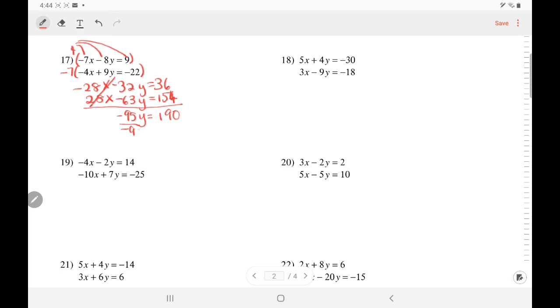Divide by negative 95. Cancel. Y equals negative 2.